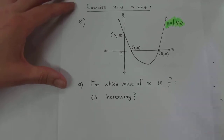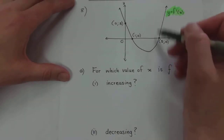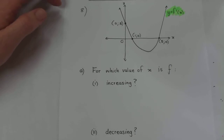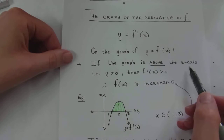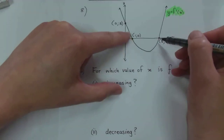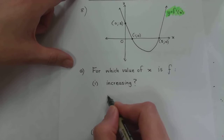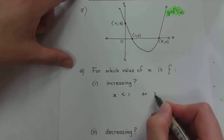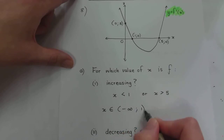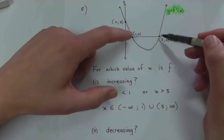The first question asks: for which values of x is f increasing? Not the derivative, but the original graph that is not drawn. If the graph is above the x-axis, then f(x) is increasing. This graph is above the x-axis from negative infinity to one, and again from five to infinity. So f is increasing where x is less than one or x is greater than five. In interval notation: x ∈ (−∞, 1) or x ∈ (5, +∞). This is where the first derivative is greater than zero.